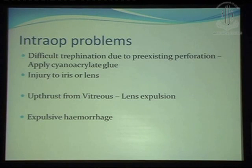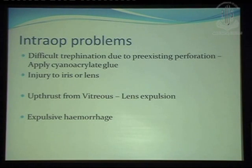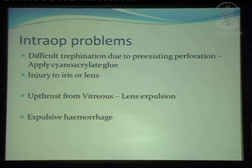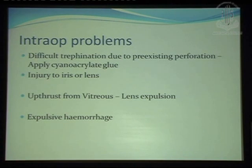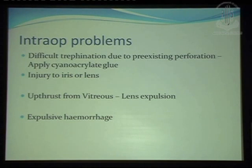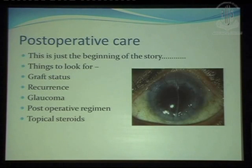Certain intraoperative problems — as Vikas has covered — are important in therapeutic keratoplasty. If there is a pre-existing perforation, please put cyanoacrylate glue; that will make trephination much easier. You can injure the lens or iris, and while peeling fibrin you can cause a dialysis or peel off the anterior capsule of the lens, so be very careful. Upthrust from the vitreous and lens expulsion is a common problem — here again, GA has a very good role and can give you very good intraoperative control. Expulsive hemorrhage — only one who has faced it knows how nightmarish it can be. To avoid such situations, again, GA is the word.